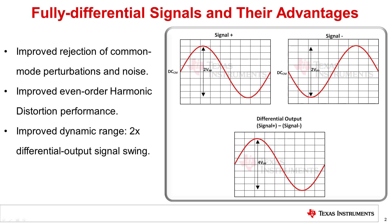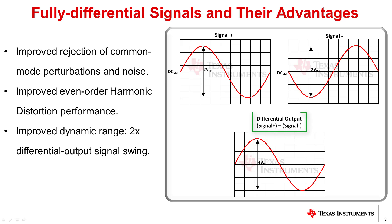Before we get into the architecture and features of a fully differential amplifier, let's first understand what a fully differential signal is. A differential signal has two complementary outputs that are 180 degrees out of phase, as shown here. Each output is level shifted by an identical DC common mode voltage. The final differential output is obtained by taking the difference between each single-ended output, and therefore has twice the magnitude of each single-ended output signal.